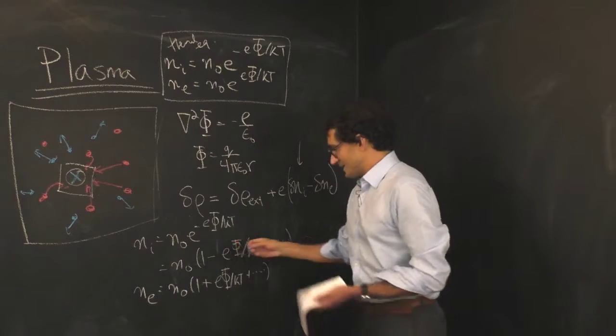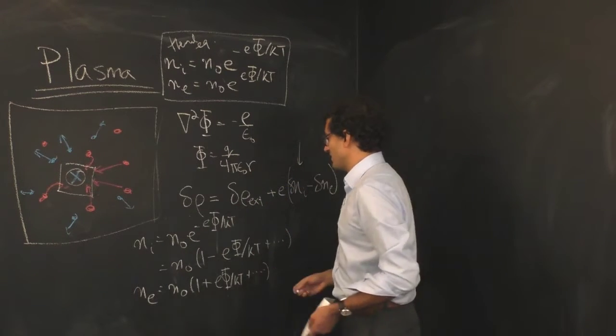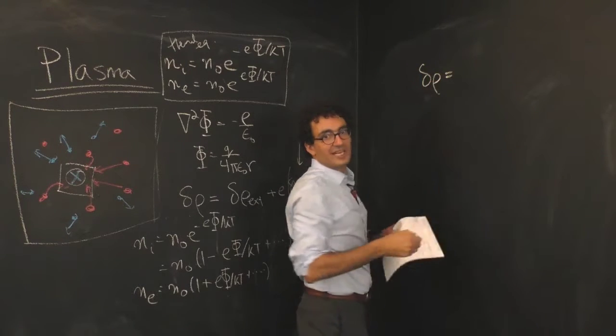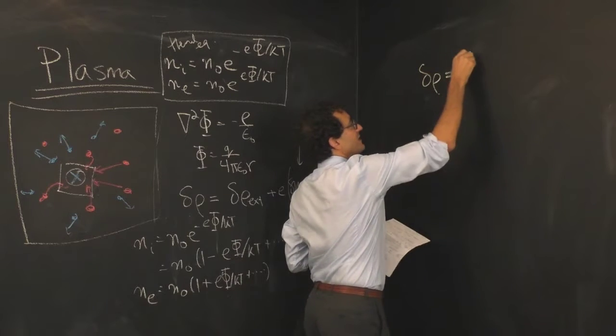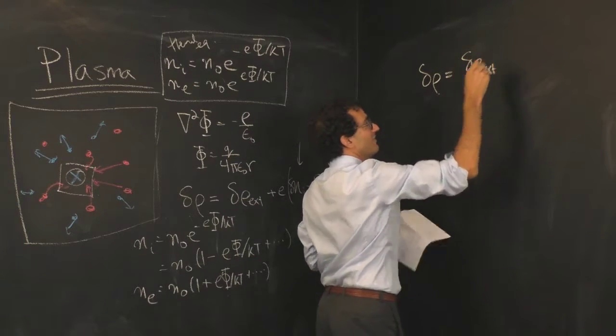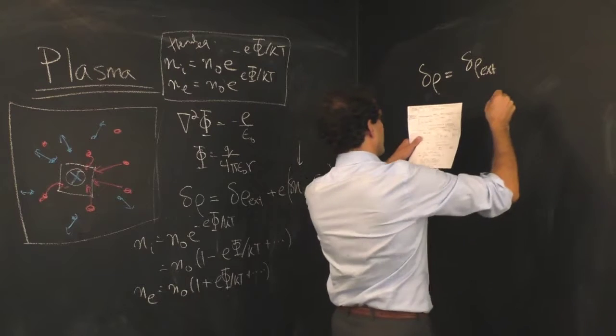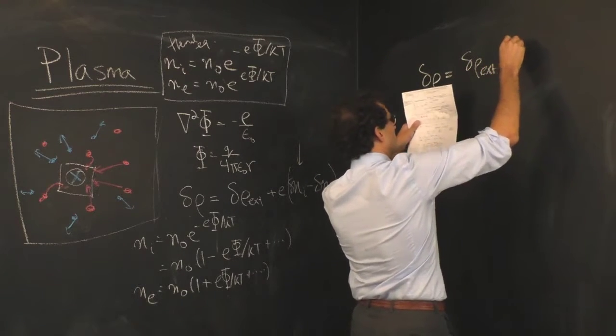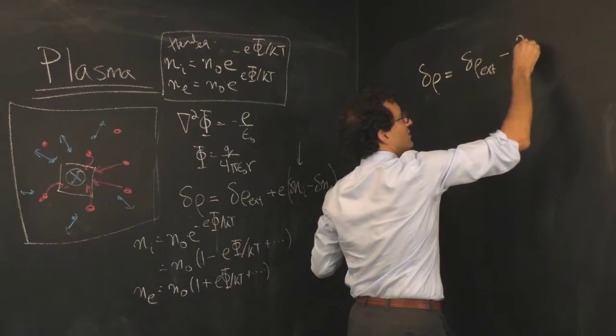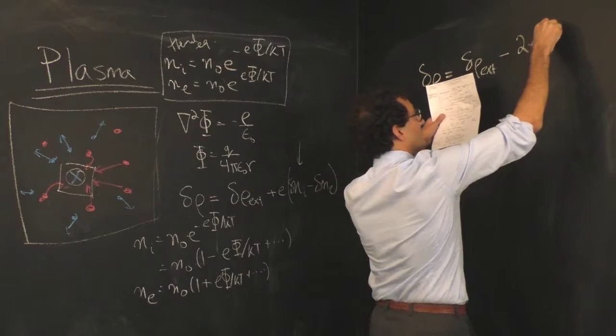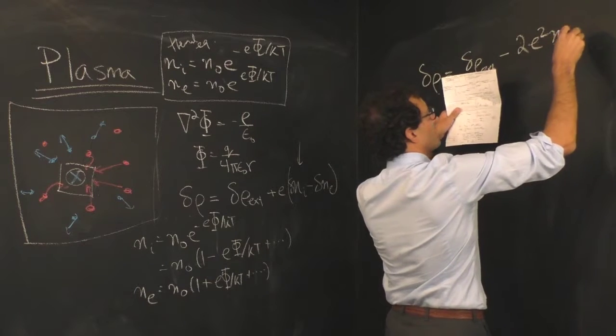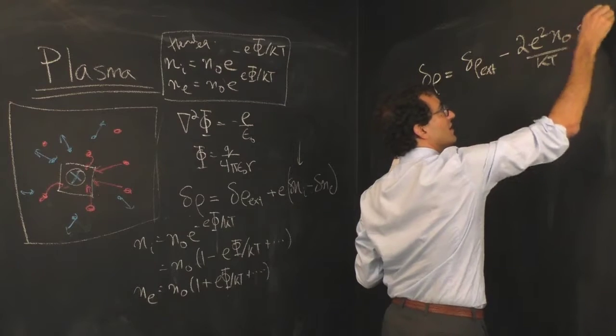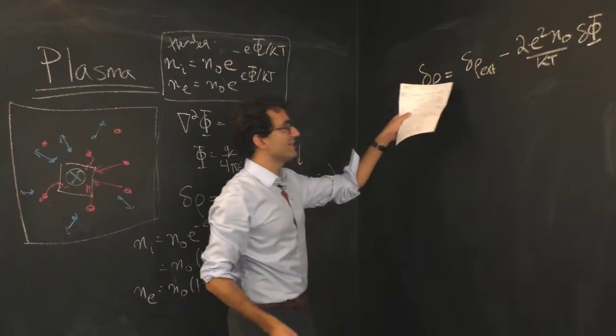If I plug in these expansions, the total charge that I've introduced equals the external charge I've introduced plus this additional term which actually acts to partially cancel out the charge that I see. I have 2e squared times n0 over kT times the additional potential that I've created.